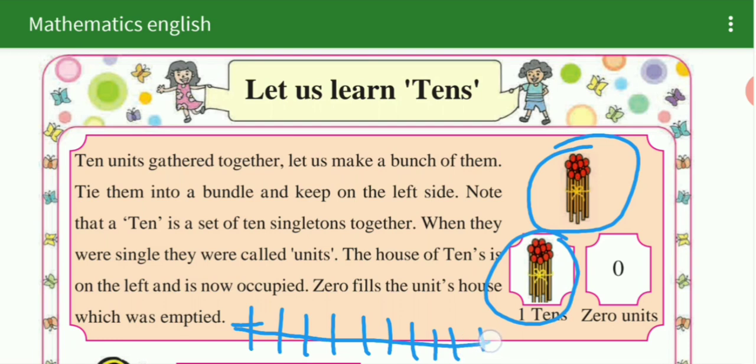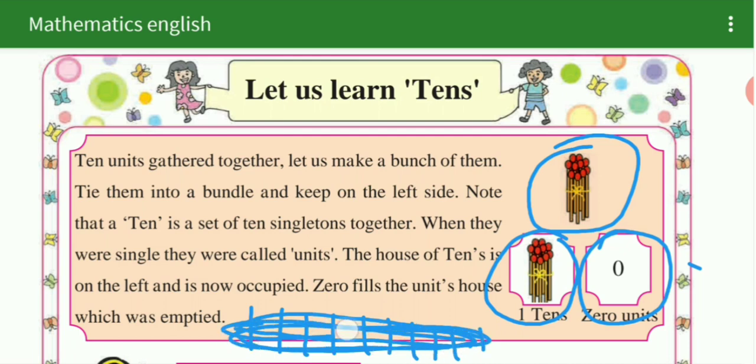And when they are together, they are called the house of a ten. The house of a ten is on the left side is now occupied. Fill the unit's house which is empty. When you have to add 10 units, then what is the one unit here?